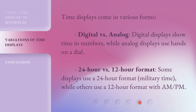Time displays come in various forms. Digital versus analog: digital displays show time in numbers, while analog displays use hands on a dial. 24-hour versus 12-hour format: some displays use a 24-hour format — military time — while others use a 12-hour format with AM and PM.